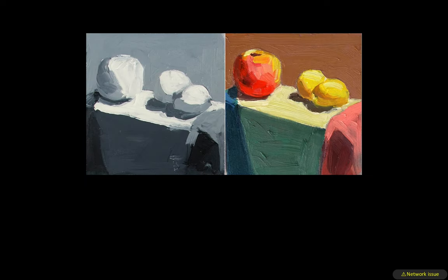We've been focusing much more on value in our first painting, and trying to understand how color translates into value and accurately representing it, so that later on we can do transparent color on top and our values will be set correctly — and that transparent color will interact with the value underneath to make a new object.